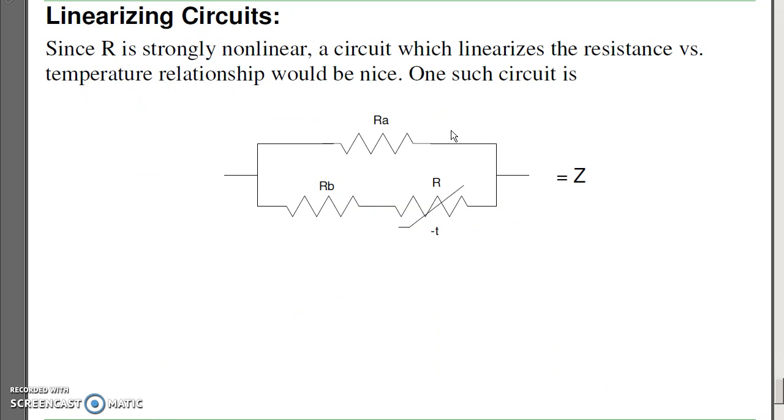The problem with thermistors is they're non-linear. There's a thing called a linearizing circuit. That's this guy right here. By choosing RA and RB, I can make the resistance more linear. Essentially what I want to do, if I want to go from minus 20 to plus 20 C, I'll choose RA and RB so that at mid-band, at zero degrees C, the voltage at mid-band is halfway between the two endpoints. Makes the resistance more linear, which also makes the voltage divider and the instrumentation amplifier more linear.